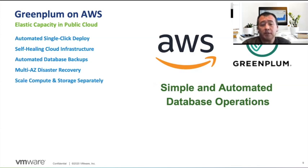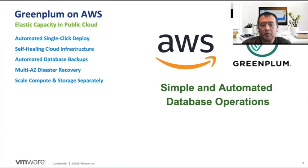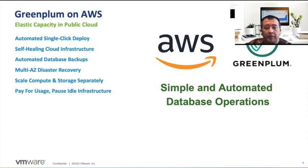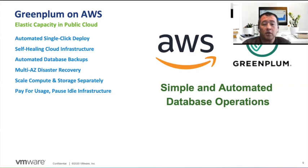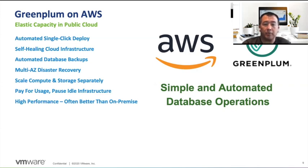We have the most flexibility in the cloud since we can truly separate compute and storage. If you only need more storage, you can grow it. If you need more CPU capacity, you can add it when you need it and shrink it when you don't. We also have the ability to pause idle infrastructure, meaning you only pay for the usage you actually require. You get the most highly performant platform you would expect from a massively parallel Postgres system like Greenplum.